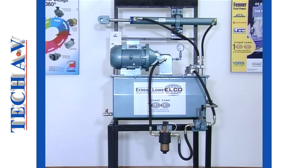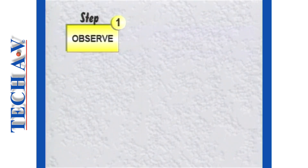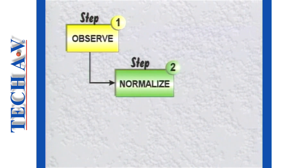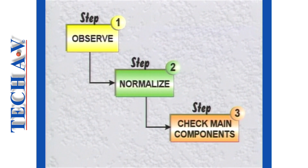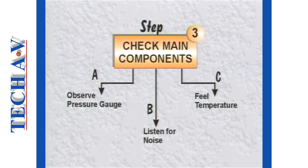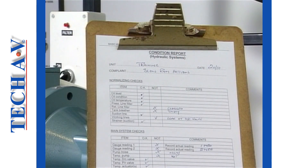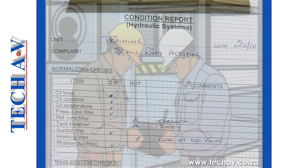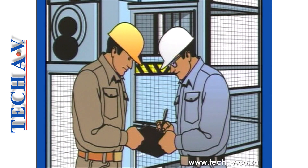Let us summarize the procedure for dealing with faults. First, we observe the problem in order to describe the symptoms accurately. Next, we perform all the normalizing checks to ensure that we do not overlook obvious faults. If normalizing does not solve a problem, then we check the major components and system operation by first observing and noting the behavior of the system pressure gauge, secondly listening for excessive or unusual noises in the pump, and finally feeling each major component for excessive temperature. Having completed your inspection, you should next report your findings to your supervisor, so that the necessary arrangements can be made for repairs to be carried out.